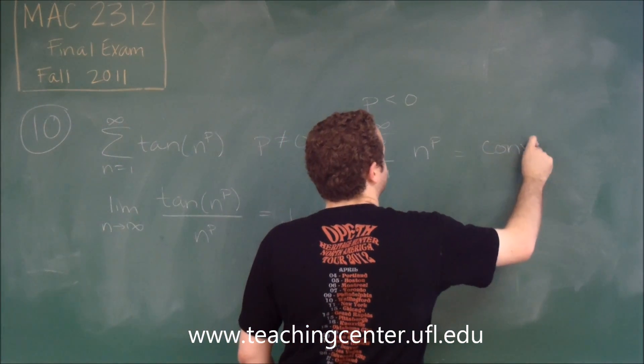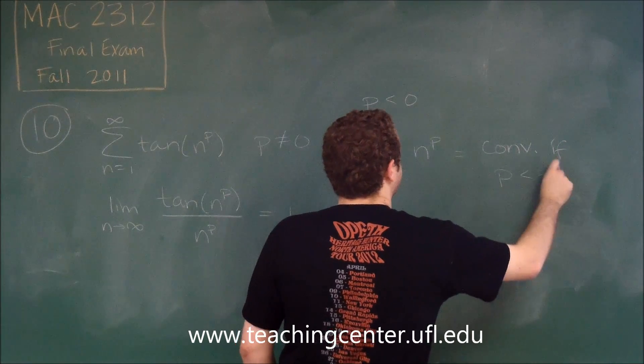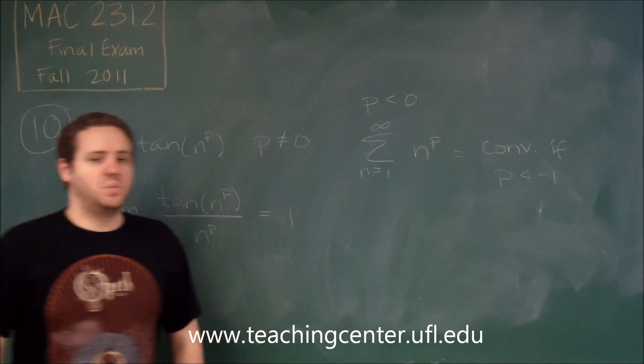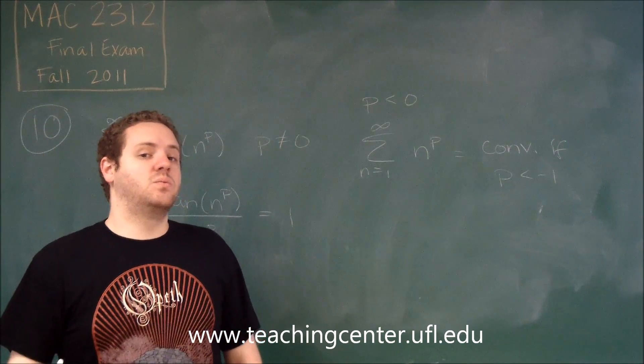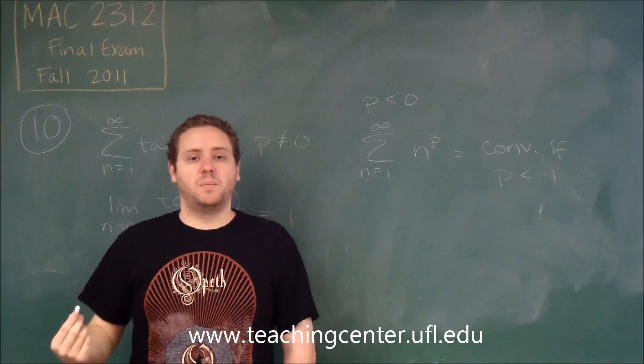This converges if p is less than or equal to negative 1. We need a power on the denominator that's bigger than 1 for this to converge, and we know that by our p series test.